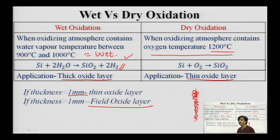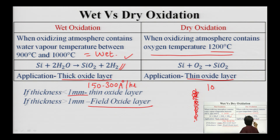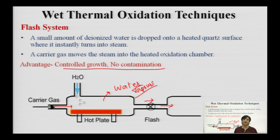In wet oxidation, the growth rate is around 150 to 300 angstroms per hour maximum, whereas for dry oxidation it is around 1000 angstroms. We have compared both oxidation processes and accordingly will apply them in different applications.